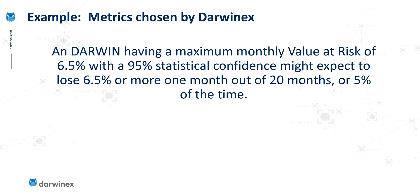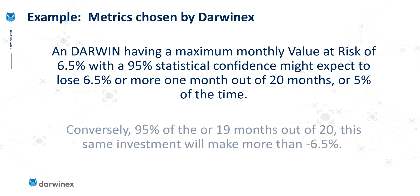We've got all three metrics: the amount of risk, which is 6.5%; the time span, which is monthly; and the statistical confidence at 95%. What this means is that in a Darwin, you can expect to lose 6.5% or more in one month out of 20 months — or in other words, 5% of the time. The converse of that means that 95% of the time, or 19 months out of 20, the same investment will make more than minus 0.65%. And hopefully many of those months will be positive returns. Value at risk provides very concise information to investors in funds so that they know what to expect in terms of risk.